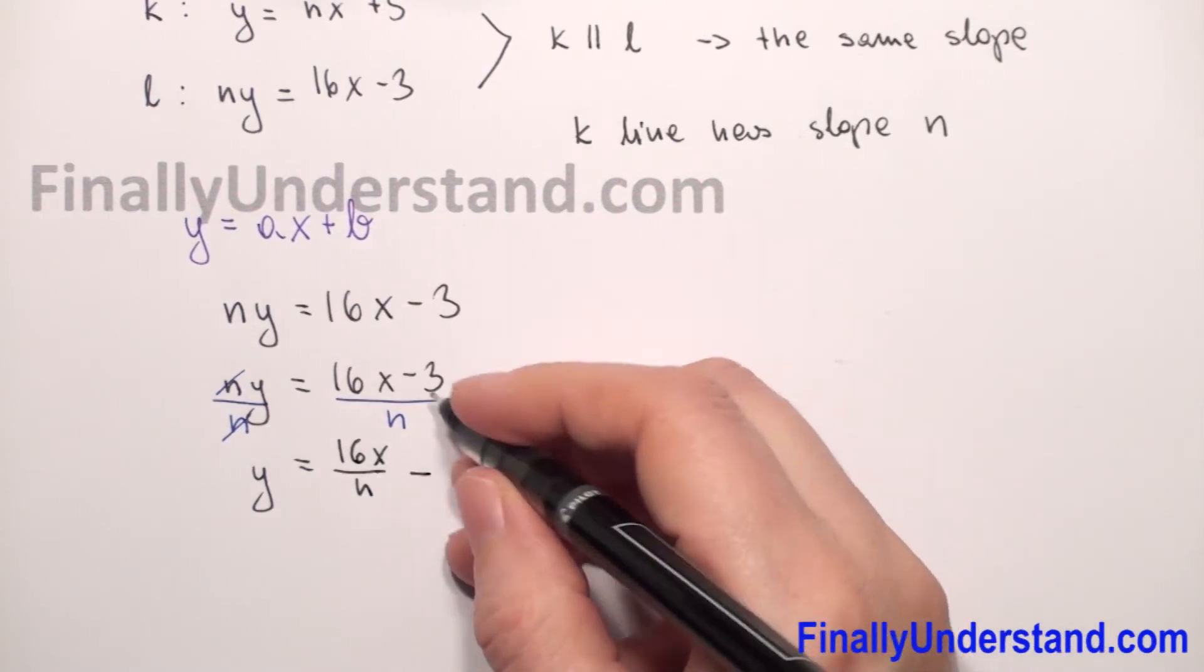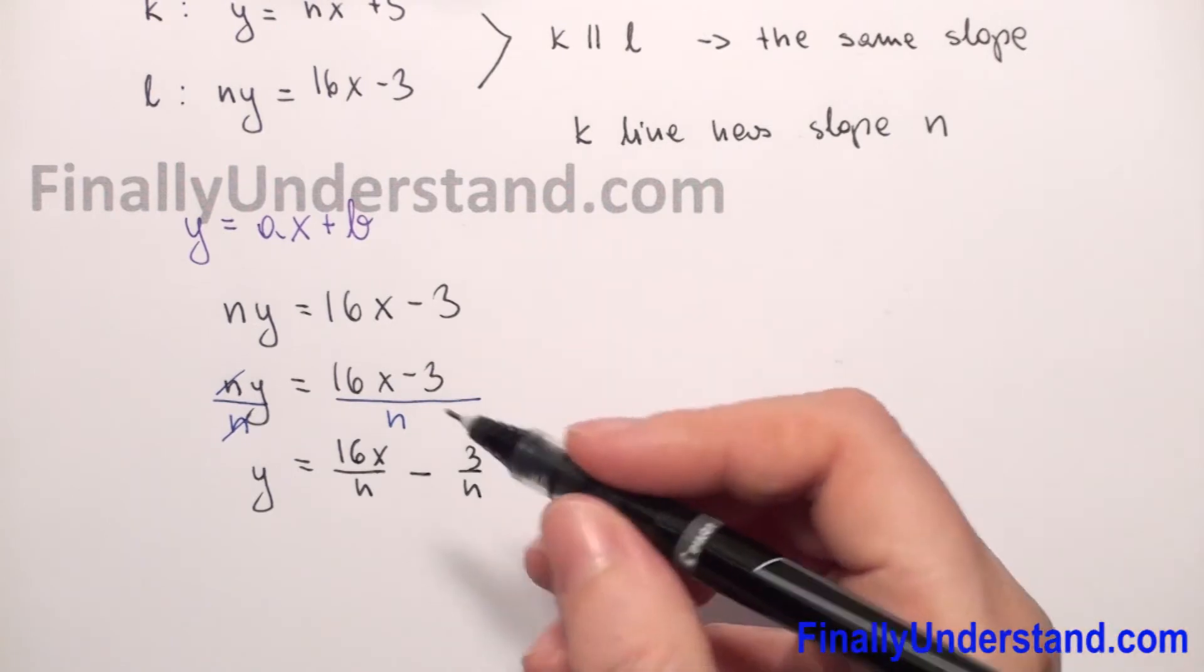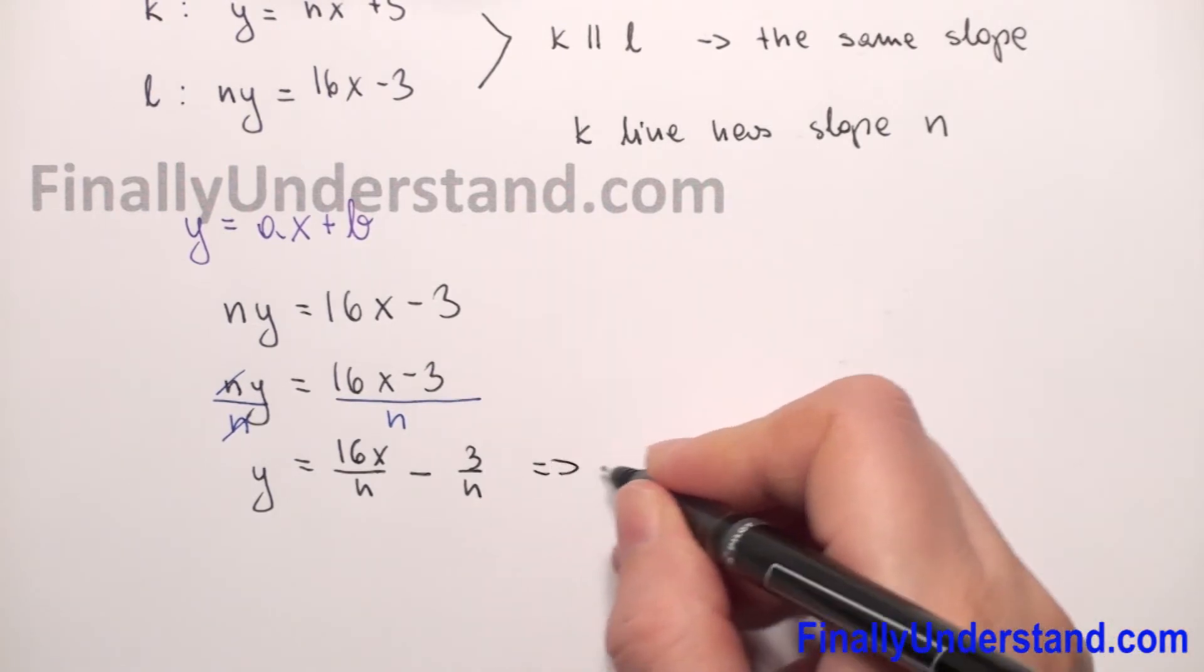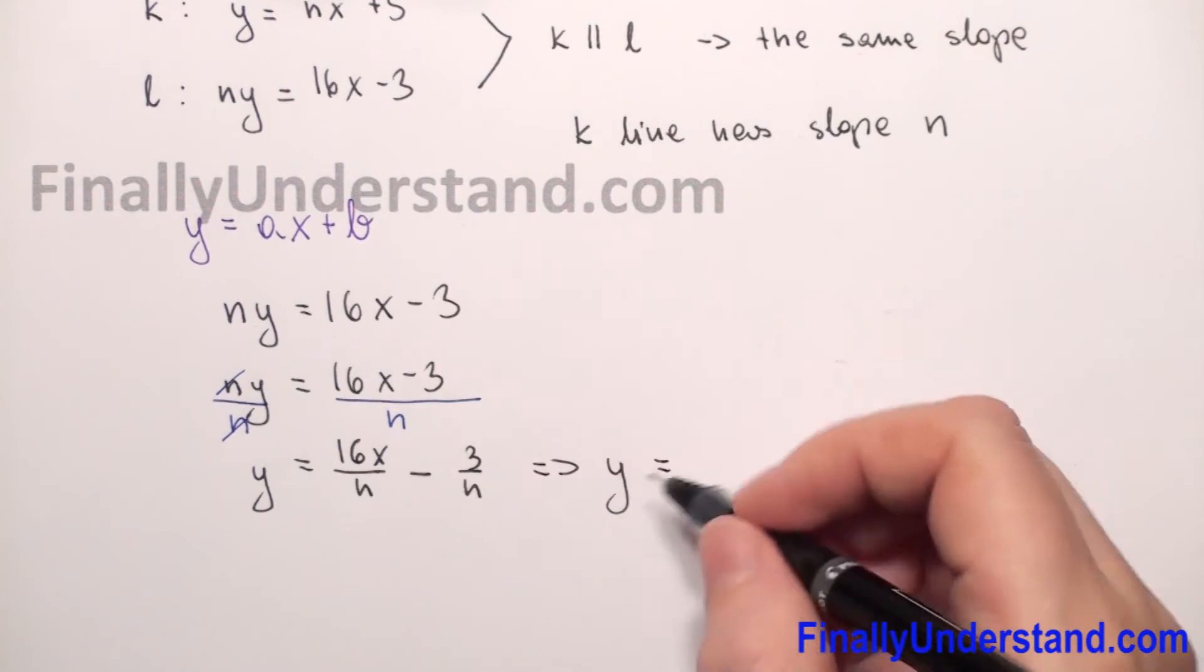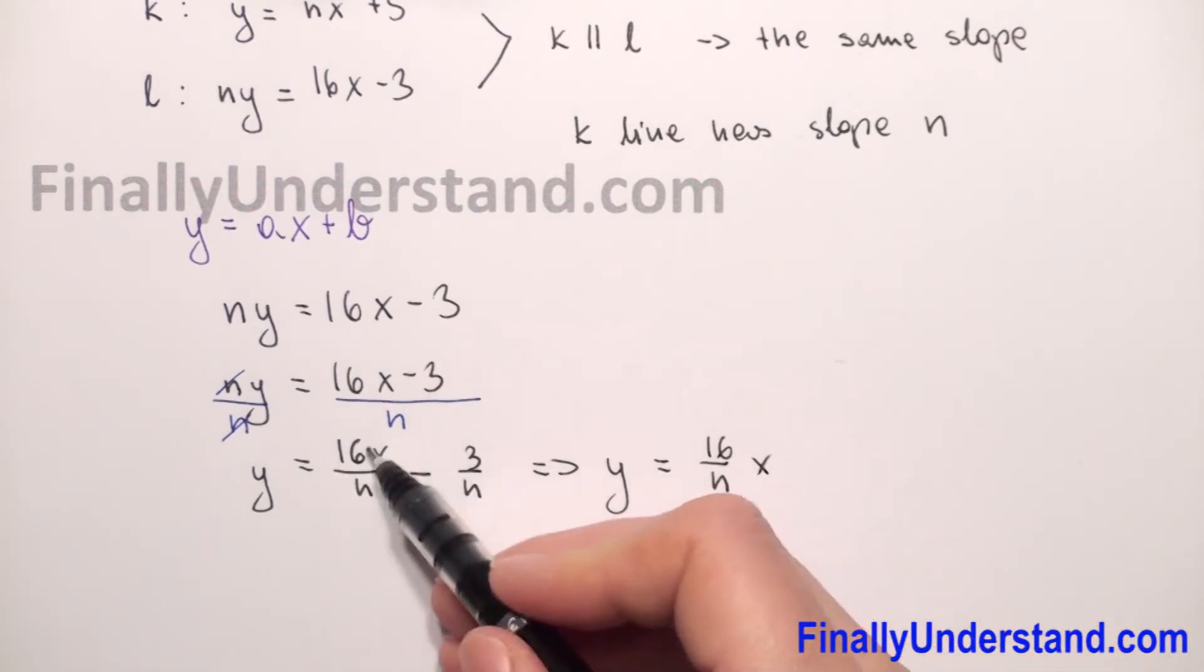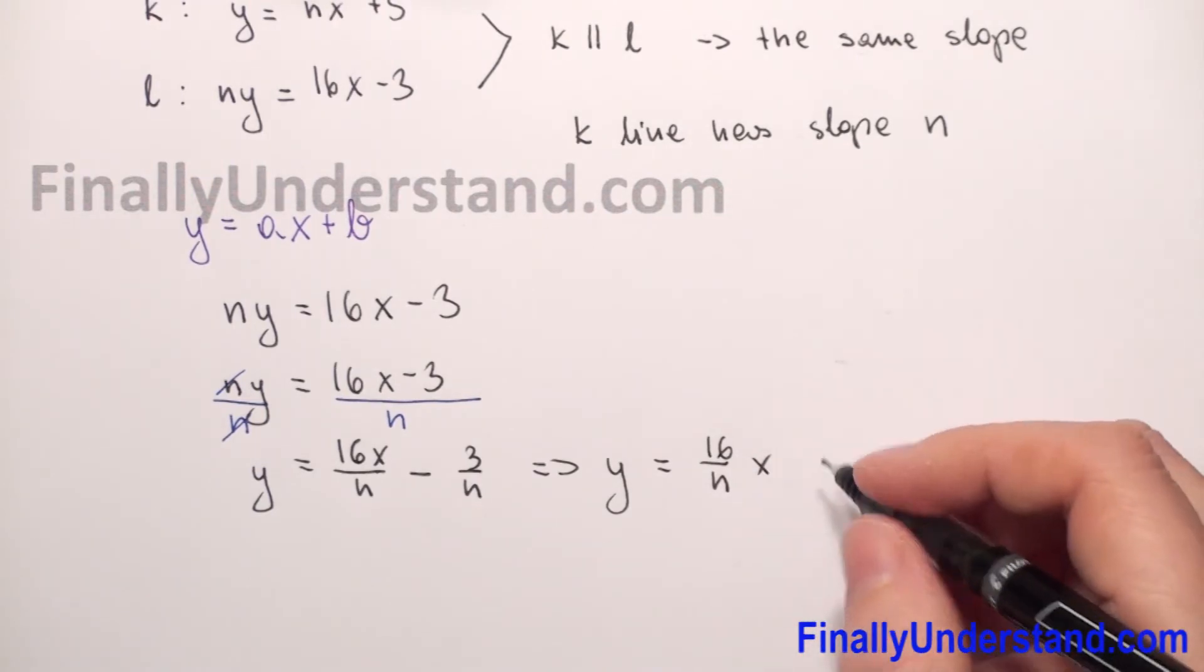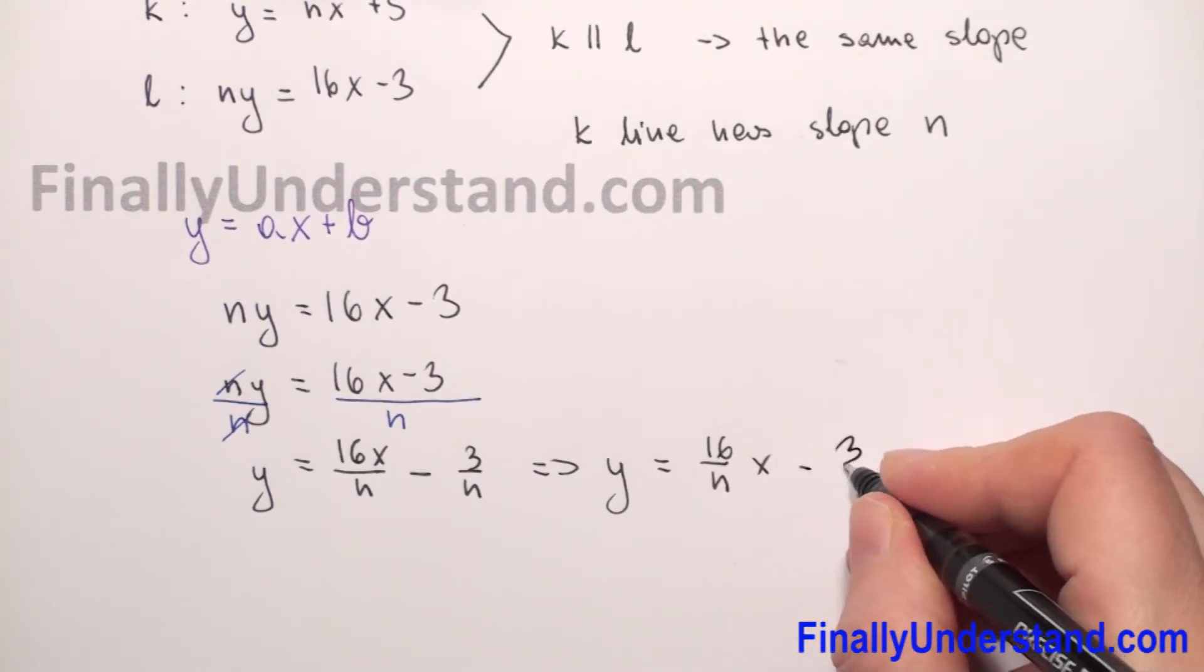So we can write that y = (16/n)x - 3/n. We can rewrite this expression as (16/n)x minus 3/n.